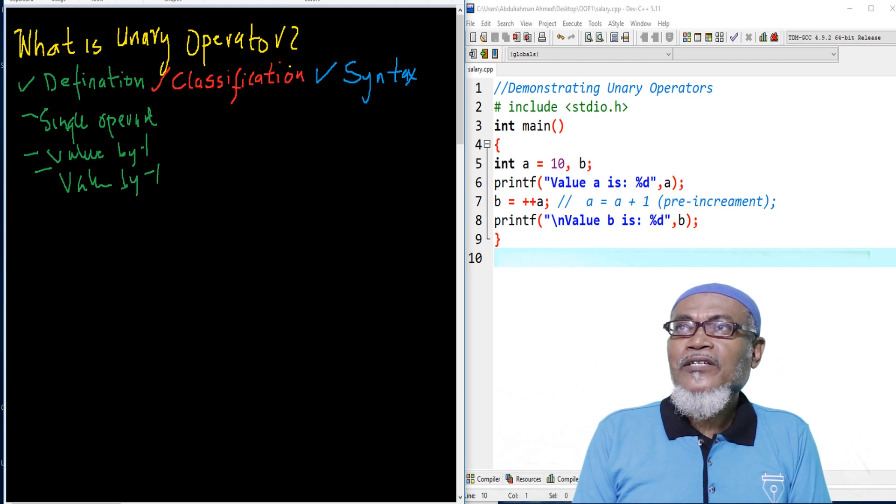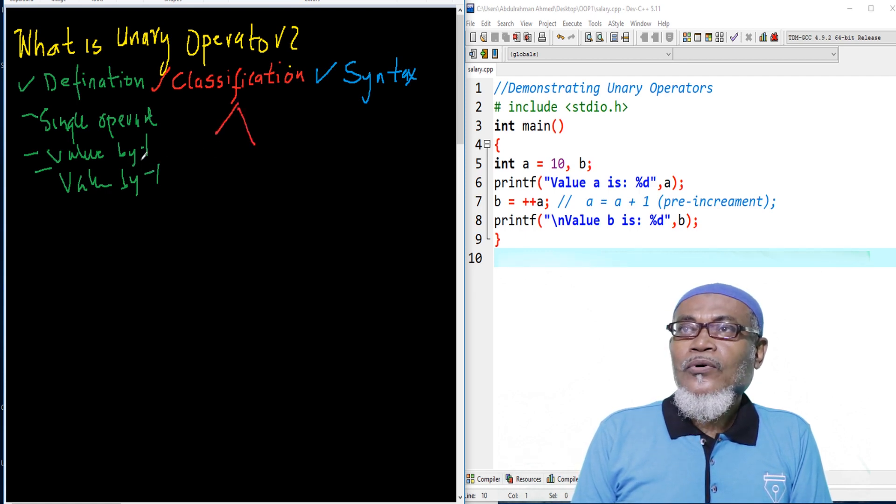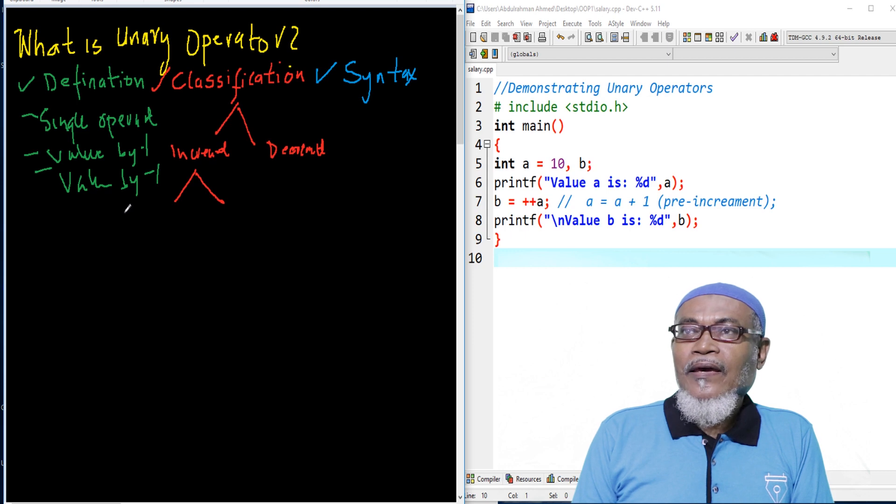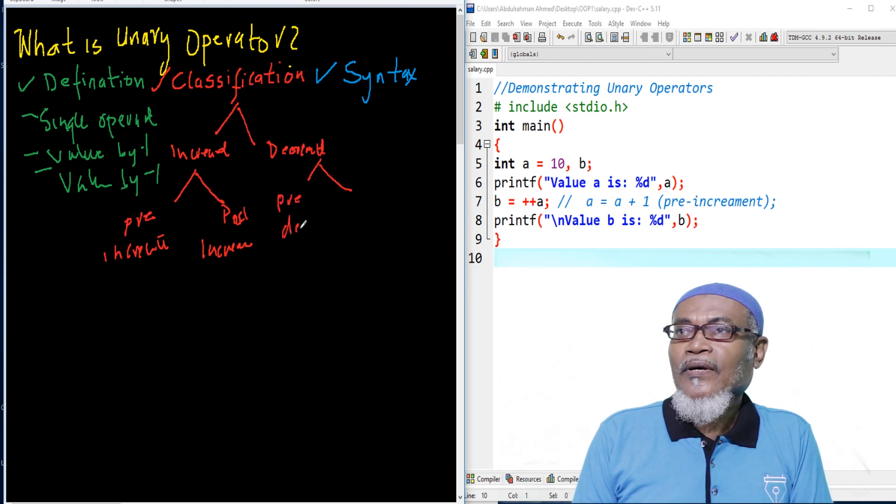So, let's see what is the classification of these unary operators. Basically, they are classified into two: one is what we call the increment, and the second one is the decrement. And further, the increment unary operators are divided into the pre-increment and the post-increment. And the decrement operators are further divided also into two: the pre-increment and the post-increment.